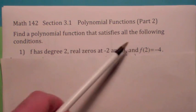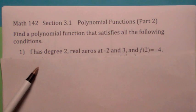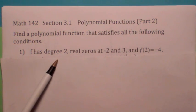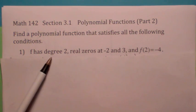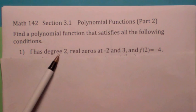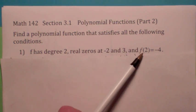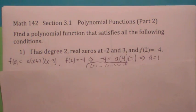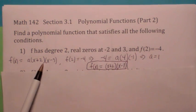Find a polynomial function that satisfies all the following conditions. It has to have degree 2. It's like a scavenger hunt. It has to have degree 2, has two real zeros at -2 and 3, and f(2) = -4. Okay, well if you just plug in... Remember, if you know the real zeros, you can factor it, right?